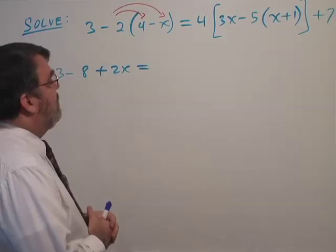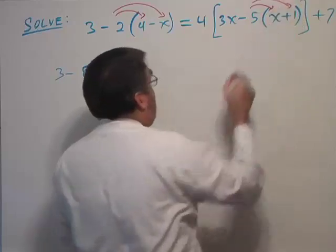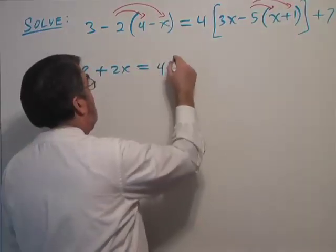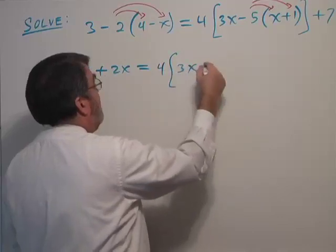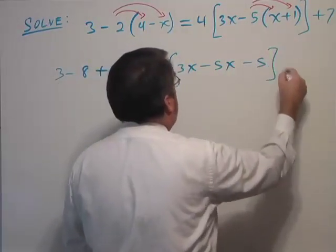Alright, so I'm going to distribute over here. Minus 5 multiplies these two terms. So that gives me 4 bracket 3x minus 5x minus 5 close bracket plus 7.